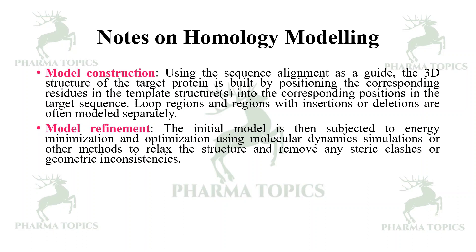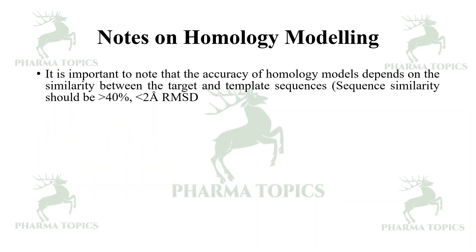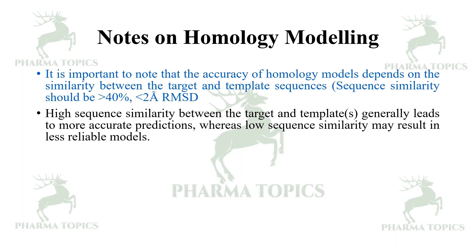Model refinement: the initial model is subjected to energy minimization and optimization using molecular dynamics simulations or other methods to relax the structure and remove any steric clashes or geometric inconsistencies. Then the model must be evaluated — using the Ramachandran plot and other structure evaluation tools — to verify the 3D structure and determine the reliability and accuracy of the model. The accuracy of homology models depends on the similarity between target and template sequences: sequence similarity should be greater than 40%, and resolution should be less than 2 Ångströms RMSD. High sequence similarity generally leads to more accurate predictions, whereas low similarity may result in less reliable models.